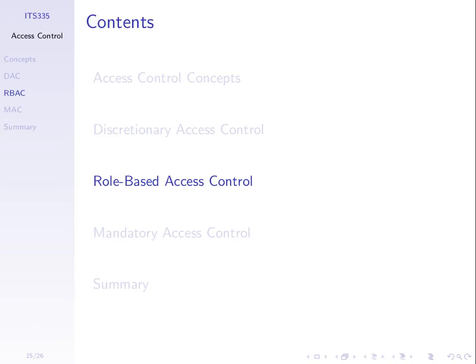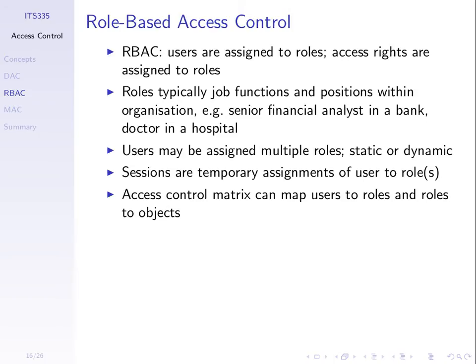With role-based access control, rather than each user having rights on each object, we assign users to roles. Each role has a particular set of rights for an object. Access rights are assigned to roles. The roles may be job functions—so in an organisation, the role may be your position: manager, director, engineer, programmer, depending upon the organisation. Based upon your role in the organisation, you may have access rights on different things in the computer system.